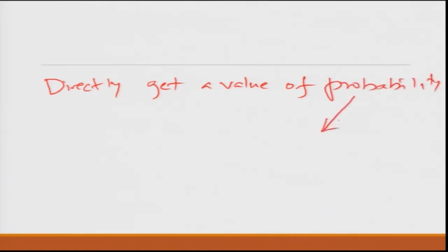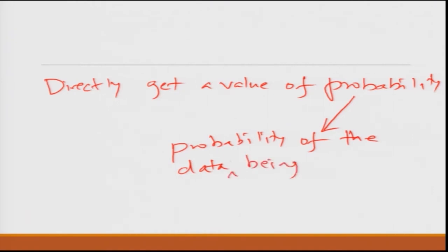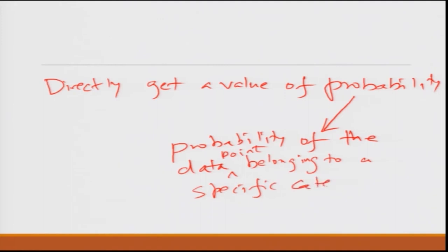This probability is the probability of a data point belonging to a specific category. In logistic regression it was a binary classification — for example, if you are modeling default, 1 was the case that the person defaulted and 0 was non-default.